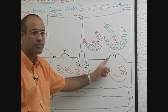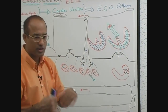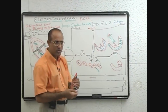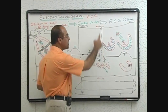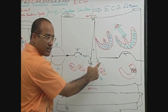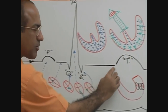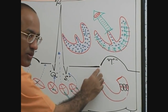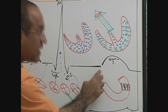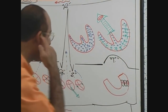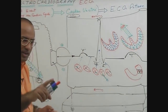The T wave represents ventricular repolarization. So in summary: QRS represents the spread of ventricular depolarization, the ST segment represents when the ventricles remain completely depolarized, and the T wave represents ventricular repolarization.